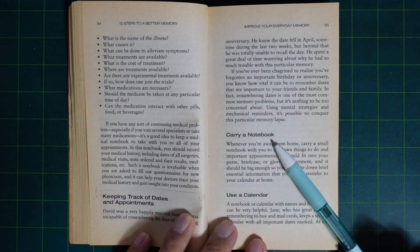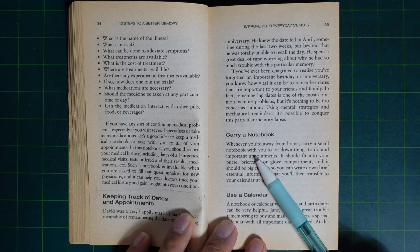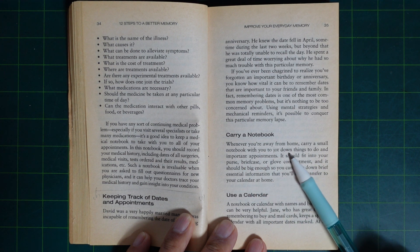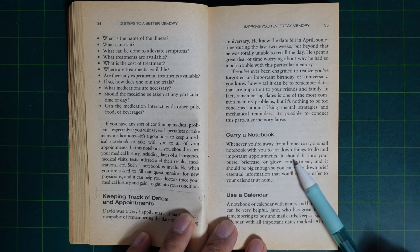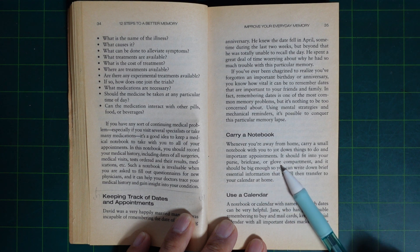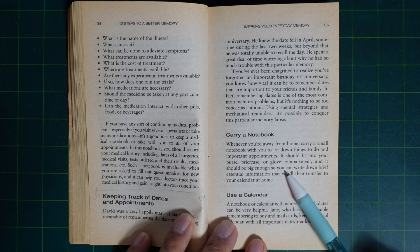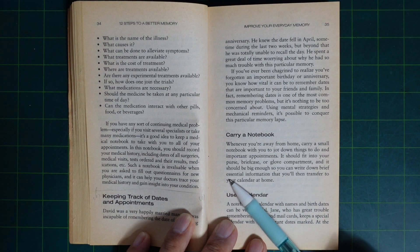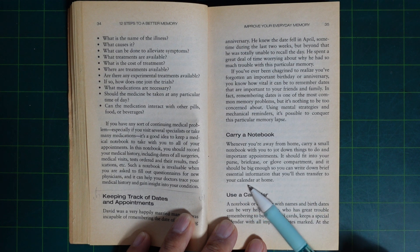Carry a Notebook. Whenever you are away from home, carry a small notebook with you to jot down things to do and important appointments. It should fit into your purse, briefcase or glove compartment, and be big enough so you can write down brief essential information that you will then transport to your calendar at home.